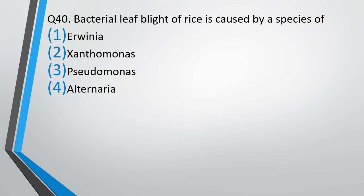Question 40. The bacterial leaf blight of rice is caused by a species of: Erwinia, Xanthomonas, Pseudomonas, or Alternaria? Bacterial leaf blight is a disease of rice caused by bacteria. The correct answer is option 2 — Xanthomonas.